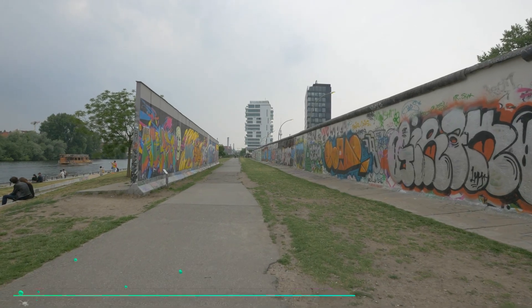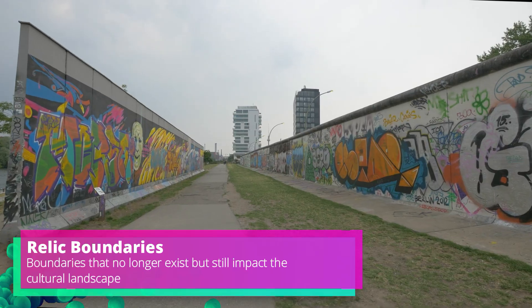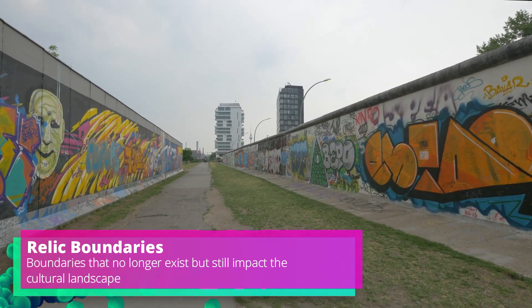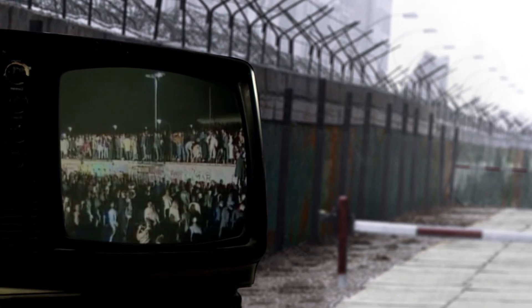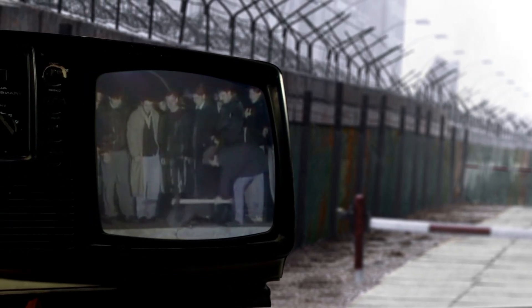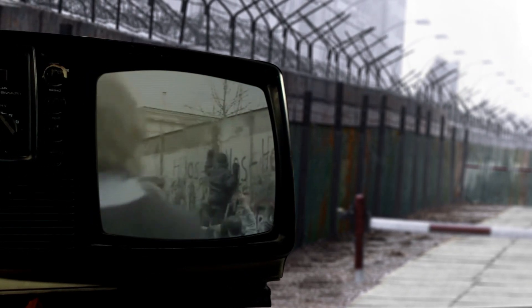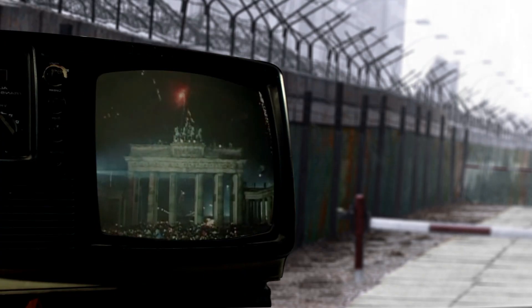Next we have relic boundaries, which are a relic of the landscape or cultural landscape — meaning they don't exist anymore and are no longer being used. However, they're still impacting and still seen and felt on the cultural landscape today. An example of this would be the Berlin Wall, which divided East and West Germany. The wall itself has been taken down; however, parts of the wall still remain as a symbol for what was. It's still impacting the cultural landscape, even though the boundary itself is no longer being utilized.